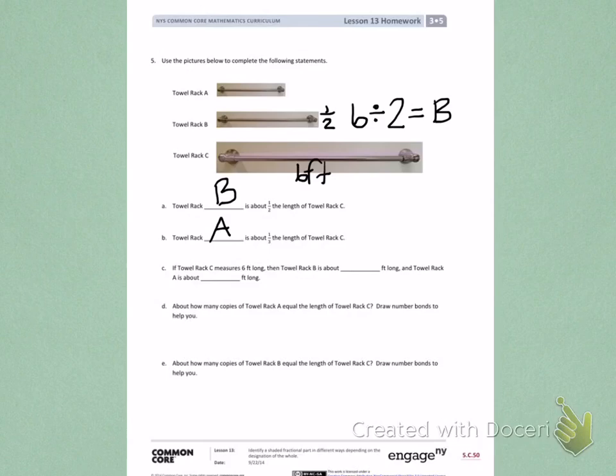Now, for towel rack A, I know my length is one third of towel rack C. So again, I want to think six feet divided into thirds will give me the length of A. You can fill in the blanks for towel rack B and A after you solve those division problems.